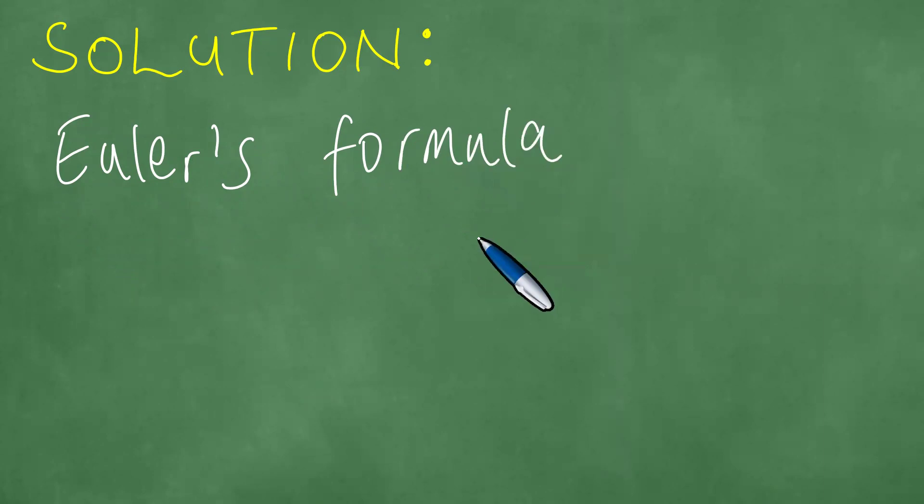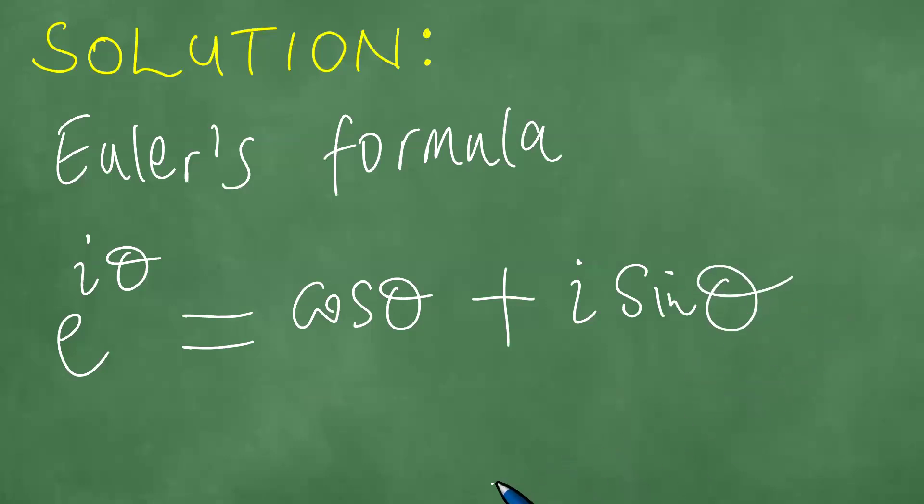What is Euler's formula? e to the i theta is actually the same as cosine theta plus i times the sine of theta. This is called Euler's formula.